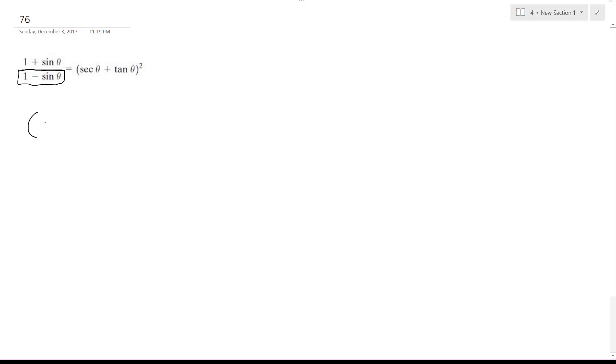So I get 1 plus sine theta on top squared, and then down here, what ends up being difference of squares, so 1 minus sine squared theta.